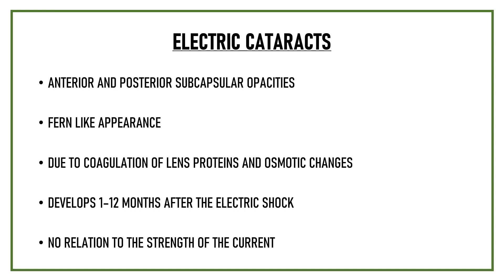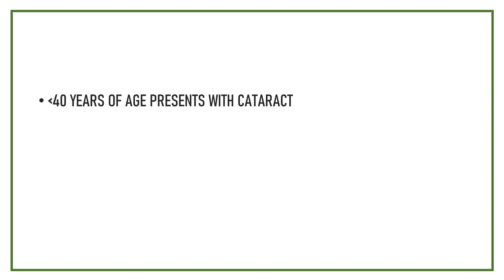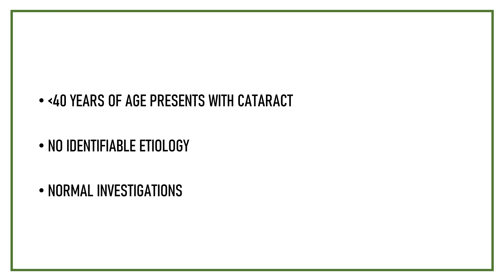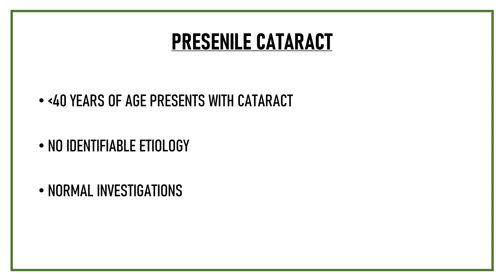If a person less than 40 years of age presents with cataract but does not have any features or symptoms suggestive of these etiologies and all investigations are found to be normal, the patient is presumed to have a presenile cataract. So, a presenile cataract is a cataract that develops in less than 40 years of age after all other known causes of cataract have been ruled out.